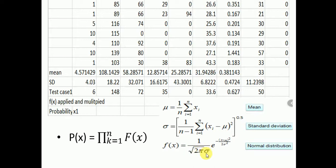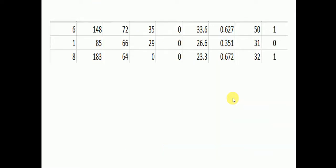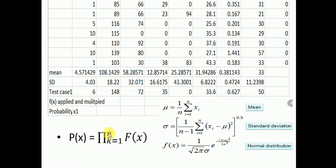The input x comes from the test case and mu comes from the training summary. We calculate f(x) for test case one: f(x) for 6, then for 148, then for 72, then for 35, 0, 33.6, 0.627, and 50. We multiply all these f(x) values for each column of the test case to get the probability of x for class zero.